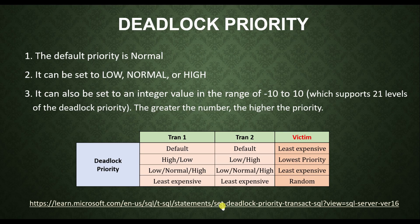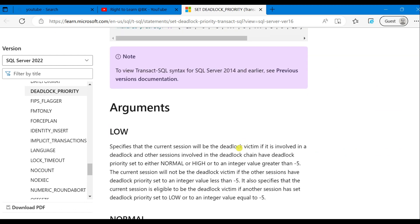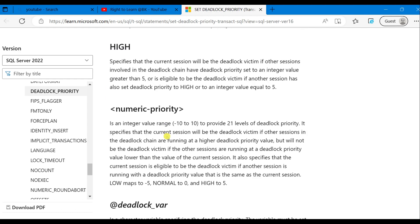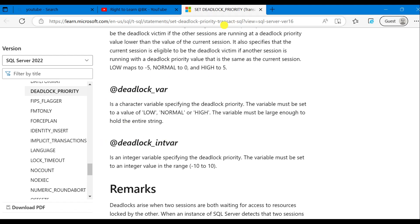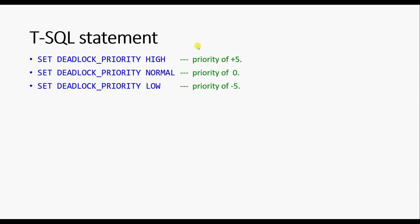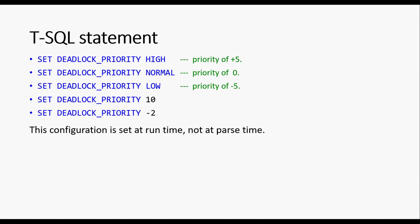There is a Microsoft document that explains the SET DEADLOCK_PRIORITY statement, its syntax, and the arguments to pass. It covers low, normal, high, and numeric priority levels — I'll paste the link in the description for your reference. The statement syntax is: SET DEADLOCK_PRIORITY followed by the priority level — high, normal, or low. If it is high, the integer value is plus 5; for low, the integer value is minus 5. You can mention either the integer value or the character variable. The configuration is set at runtime, not at parse time.